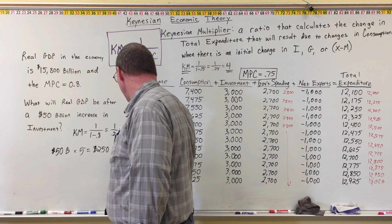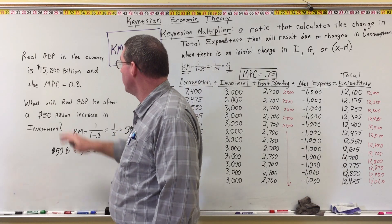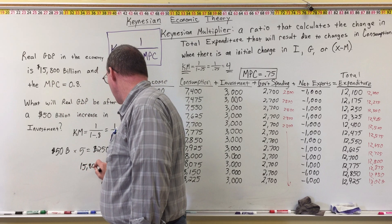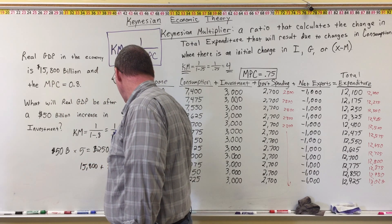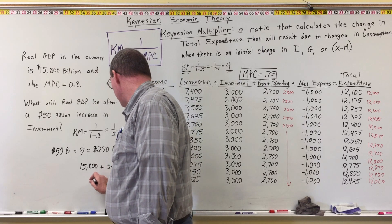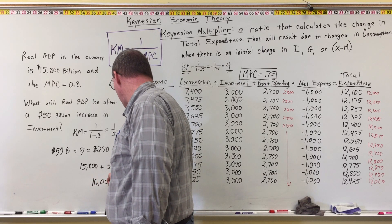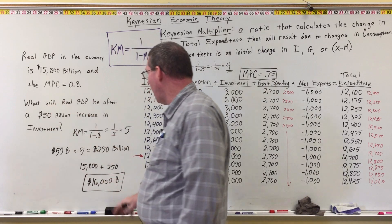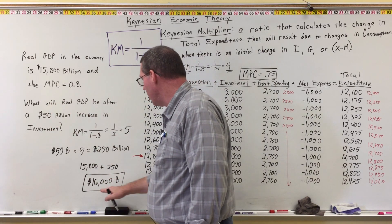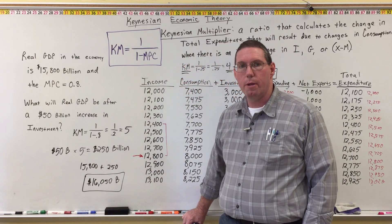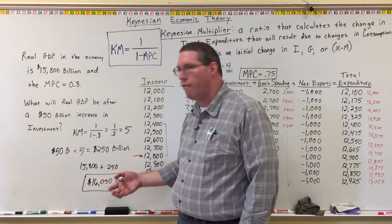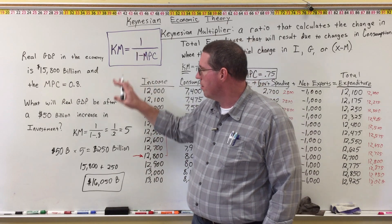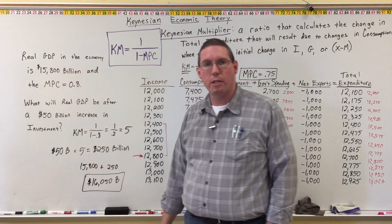Now we add the 250 billion to the starting real GDP: 15,800 plus 250 billion equals 16,050 billion. So the answer to the question — what will real GDP be after the 50 billion dollar increase? — is 16,050 billion dollars, which is the same as 16.05 trillion dollars. That is one of the ways you can use the Keynesian Multiplier to know how there's going to be a change in the economy.